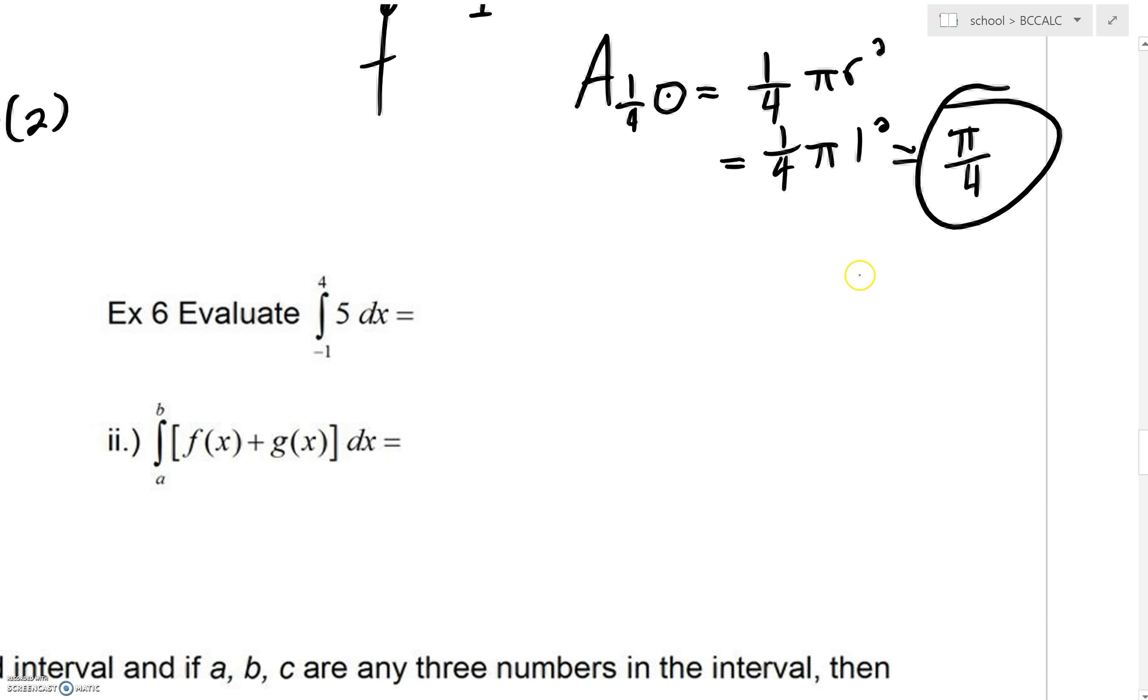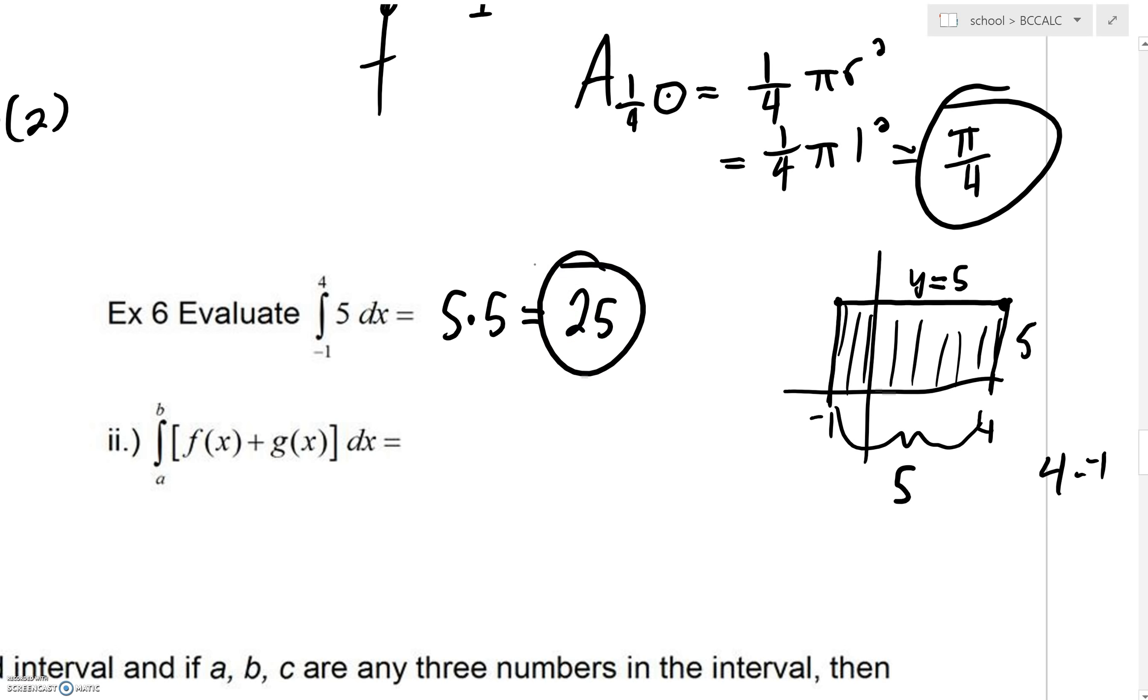So real quickly you could, if you wanted to, even work this out graphically. You most certainly could. Look, you could say here's -1 and over here is 4, and we're going to have a constant y value of 5. Could we create a rectangle here? We can. How far is it from -1 to 4? Well, end minus beginning, that's 5. And then what's your height? Well that's 5. So what is this area? It's 5 times 5. Plain and simple, it's 25.